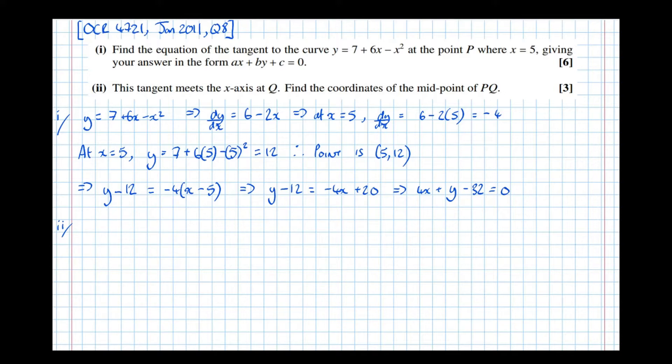Well, if it meets the x-axis, y must equal 0. So we're going to let y equal 0. That means that 4x minus 32 equals 0. We're trying to find the x-coordinate. Let's rearrange that. 4x equals 32, which means that x equals 32 over 4 equals 8.